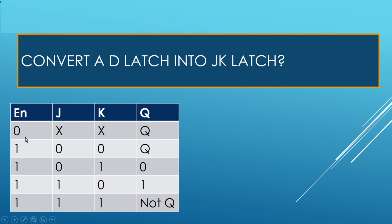When enable is 1, then output Q depends upon the value of J and K. When enable is 1 and J and K both are 0, output should be last (latched to previous value).